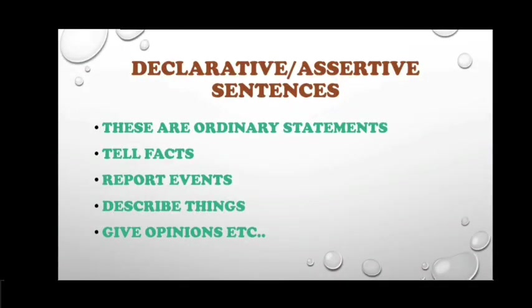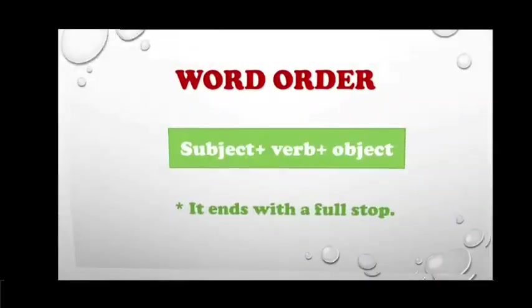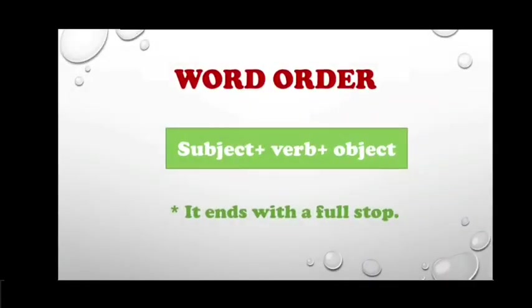Declarative sentences are ordinary statements that tell facts, report events, describe things, give opinions, etc. The word order of a declarative sentence is: subject plus verb plus object, and it ends with a full stop.